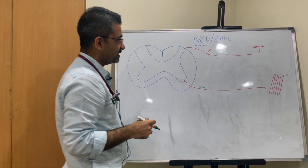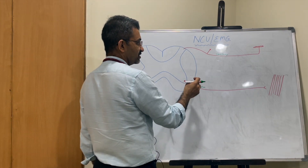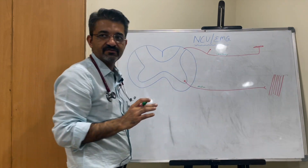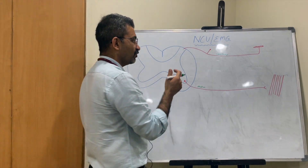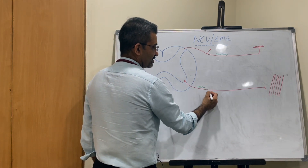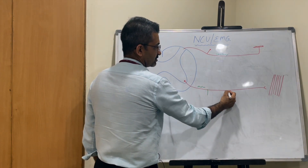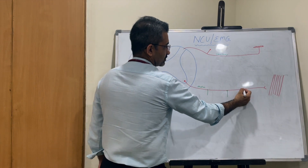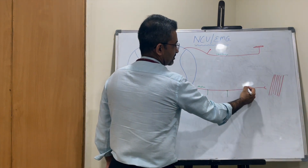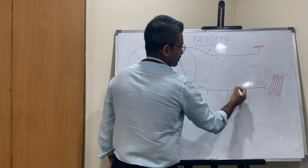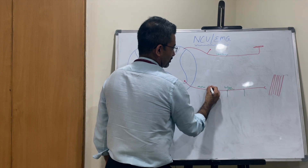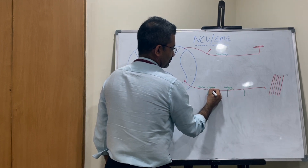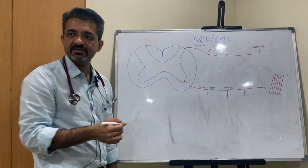The basic principle is that we stimulate both motor and sensory nerves, so we are assessing both motor and sensory aspects. We stimulate the motor nerve at various places — say at the wrist, below the elbow, above the elbow, and even at the plexus we can stimulate.